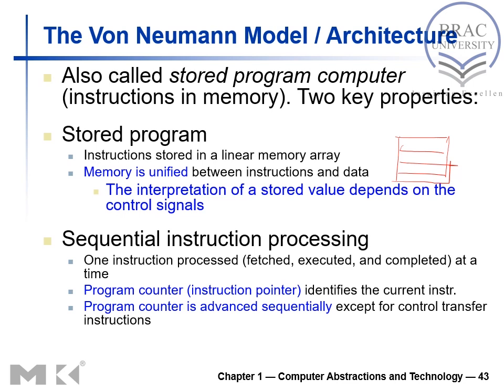The second property is Sequential Instruction Processing, which means one instruction is processed at a time. The program counter, or instruction pointer, identifies the current instruction and controls the transfer of instructions.